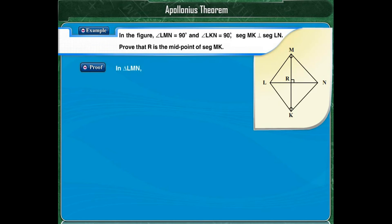Proof. In triangle LMN, angle LMN is equal to 90 degrees and segment MK is perpendicular to segment LN. Since MR is the perpendicular drawn from the vertex of the right angle LMN to the hypotenuse LN, by the property of geometric mean, MR squared is equal to LR into RN.